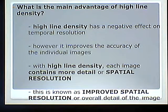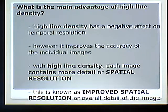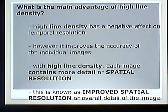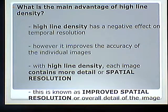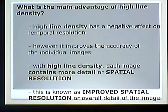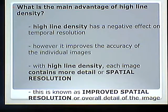What is the main advantage of high line density? High line density has a negative effect on temporal resolution — it slows things down. However, all those pulses tightly packed together improve the accuracy of individual images. It's like going from a 2-megapixel camera to a 20-megapixel camera — super detailed. With high line density, each image contains more detail: this is known as improved spatial resolution.